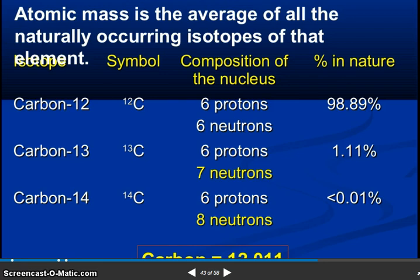Symbols, composition of nucleus, percentage in nature. Carbon 12, carbon 13, carbon 14. You see 6 protons 6 neutrons, 6 protons 7 neutrons, 6 protons 8 neutrons. You see the percentage: less than 0.01, 1.11, 98.89.